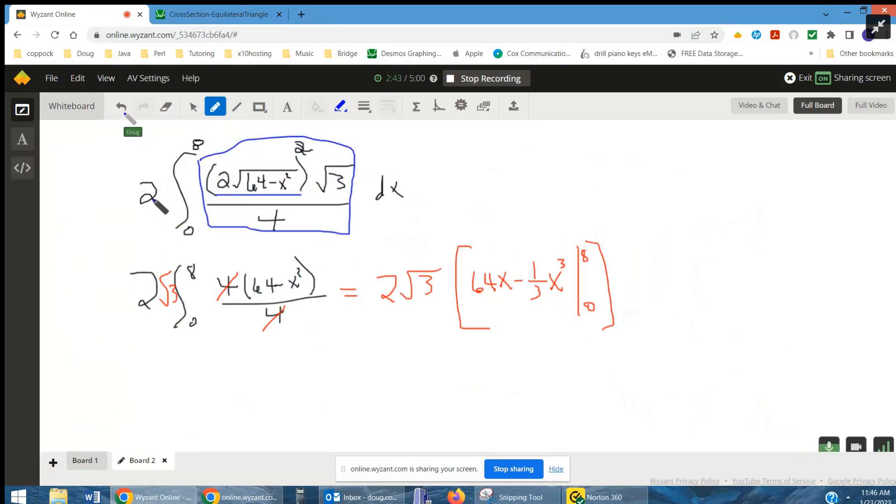And then if we double that for the definite integral from 0 to 8, we'll have the volume of the solid that's generated. So we could move this radical 3 out front, square this expression here.